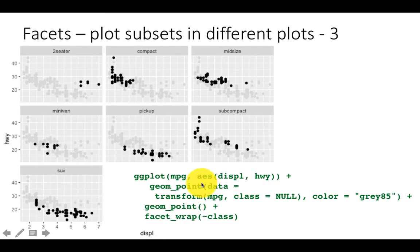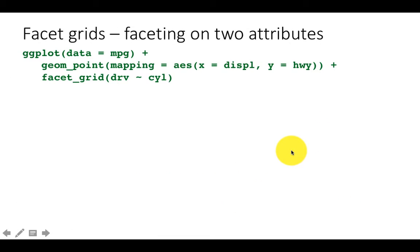So this part is what is producing this unhighlighted points and this part, geom point plus facet wrap is what is producing the highlighted actual facet points, which is exactly like the previous plot. So you can do a lot of tricks like this as well to show some of these things.